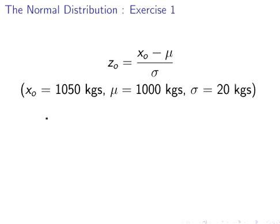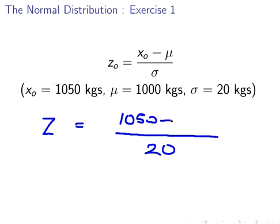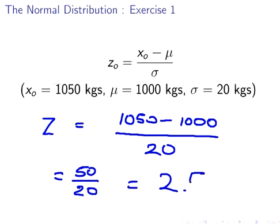The Z-score is computed as follows. Z equals over 20, we are going to have 1050 minus 1000. That's equal to 50 over 20, and that is equal to 2.5. There's no units for it, it's simply just 2.5, not 2.5 kg. It's just 2.5.